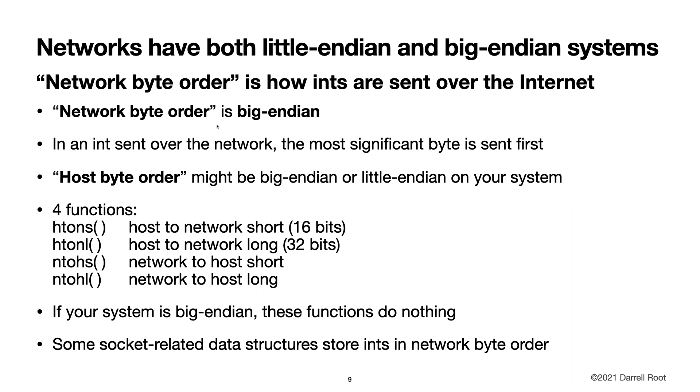Networks have both little Endian and big Endian systems. Network byte order is how ints are sent over the internet. And network byte order is big Endian. The most significant byte is sent first whenever you send a multi-byte integer over the network. Host byte order might be big Endian or little Endian on your system. And that brings us four functions: htons, host to network short, which converts from host byte order to network byte order on your operating system and microprocessor. And short, that's for 16-bits, host to network long, and network to host short, and network to host long.